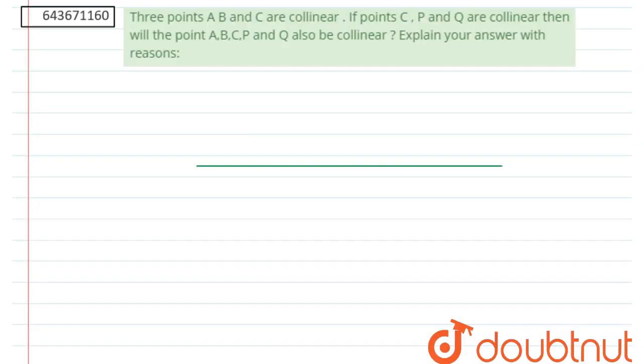Hello everyone, the question is: Three points A, B, and C are collinear. If points C, P, and Q are collinear, then will the points A, B, C, P, and Q also be collinear? We have to explain our answer.